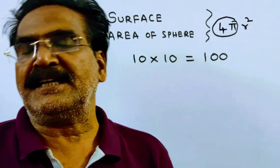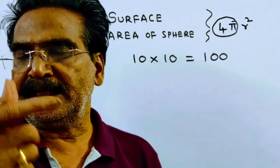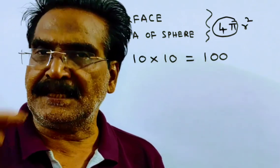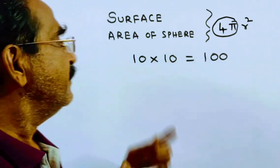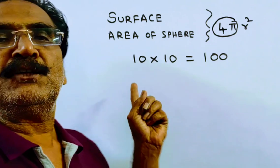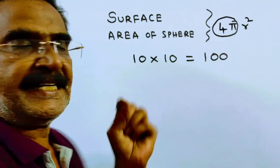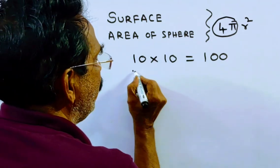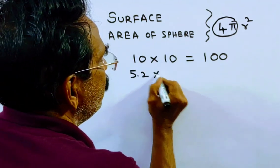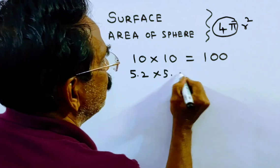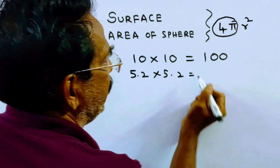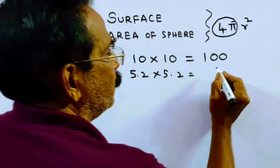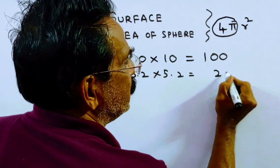Now it is decreased by 48%. Decreased by 48% means the remaining is 52%. So 52% of 10 is 5.2. Therefore 5.2 × 5.2 = 27.04.